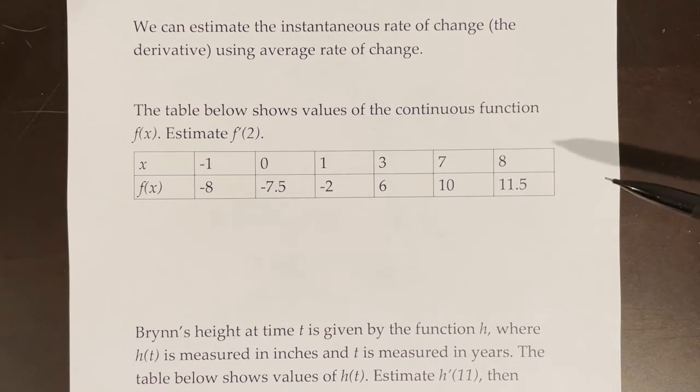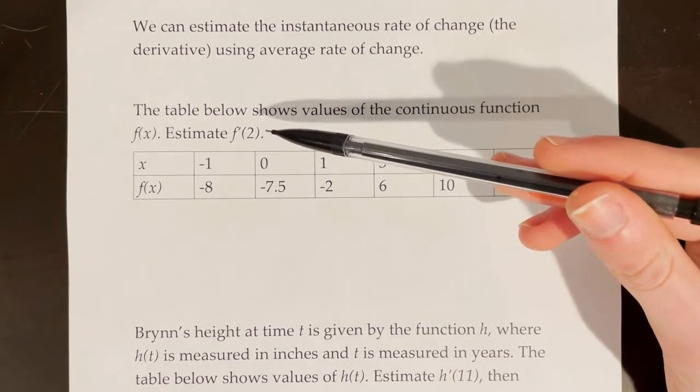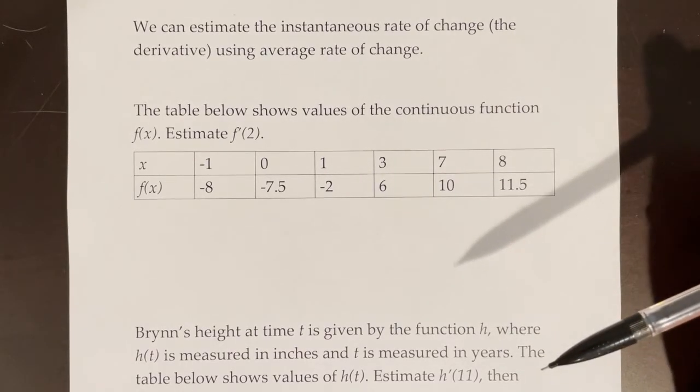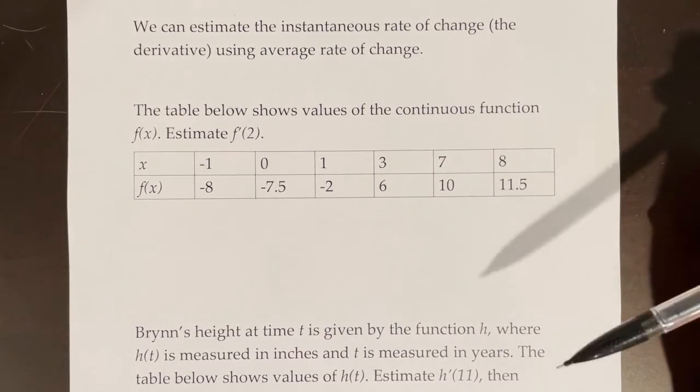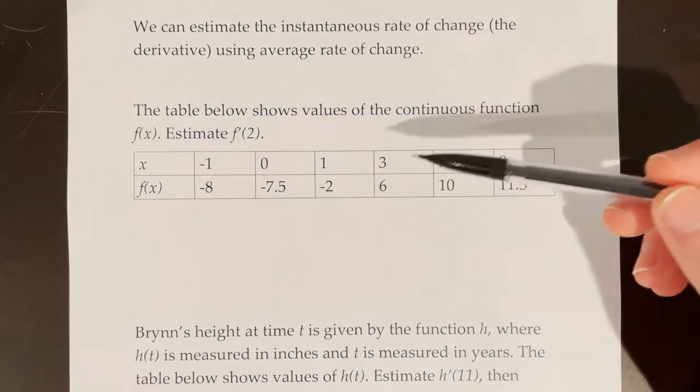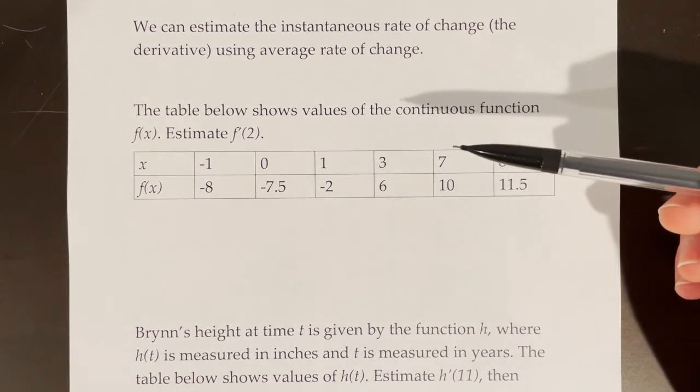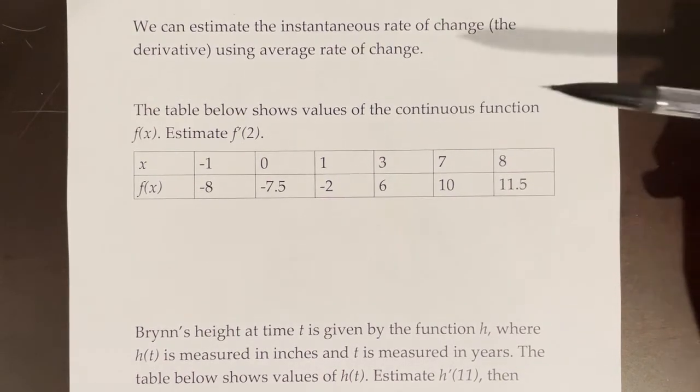The table below shows values of the continuous function f of x. Estimate f prime of 2. When we're trying to find f prime, the way that we know how to find the derivative so far is by using our limit definition of the derivative that involves the difference quotient. But in order to do that, we need an actual function. We need to be given f of x equals something like x squared or x cubed or x plus 5, and we don't have that in this case.